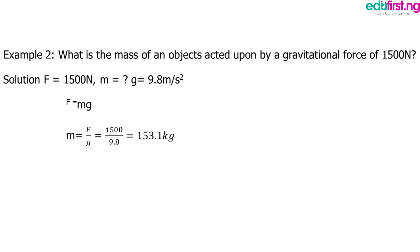Example two. What is the mass of an object acted upon by a gravitational force of 1500 Newton? Solution: itemize what we are given in the question. We are given our force to be 1500 Newton. Our mass m is what we are asked to calculate. And g has been given to us to be 9.8 meter per second squared. From our formula F equals mg, we make m the subject of formula. That is, m equals F divided by g, which equals 1500 over 9.8, which equals 153.1 kg. That is our mass that we are asked to calculate.